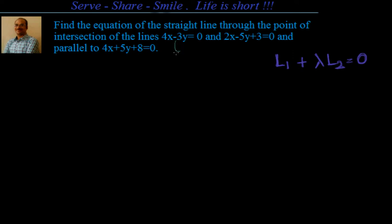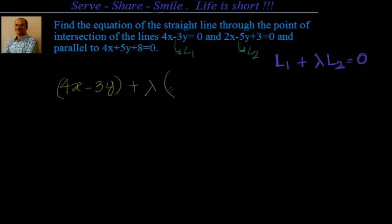Let us say that L1 is 4x minus 3y equal to 0 and L2 is 2x minus 5y plus 3 equal to 0. Then the family of lines passing through the fixed point — that is, the point of intersection of these two lines — is given by L1 plus lambda into L2, which is 4x minus 3y plus lambda times 2x minus 5y plus 3 equal to 0. We have been given that this line should be parallel to 4x plus 5y plus 8 equal to 0.